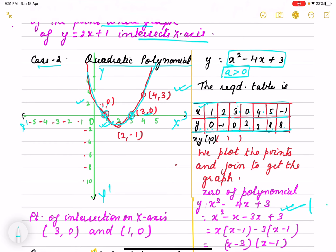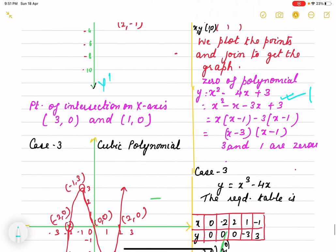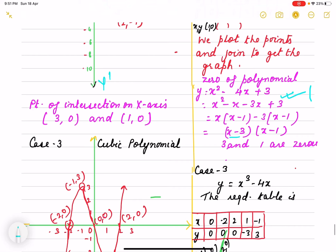And if we find out zeros of the polynomial, we are getting here 3 and 1. That means which point it intersects the graph, the abscissa of the coordinate and ordinate as it intersects on x-axis will be 0. So we can verify by the graph also.